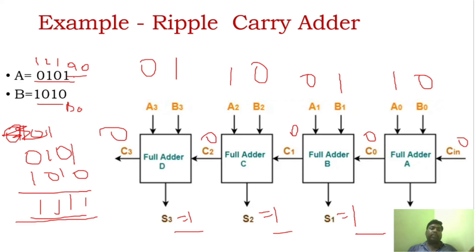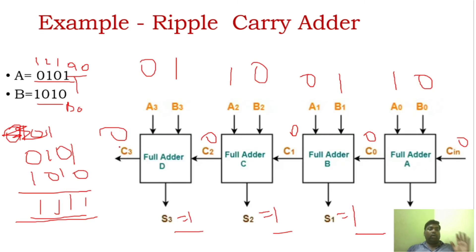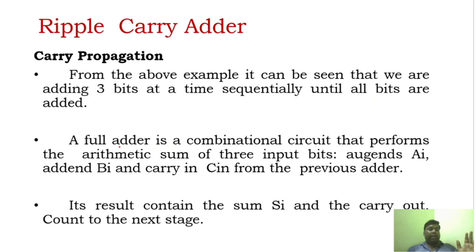If the question is asked, they will give these numbers and say: perform addition using ripple carry adder. What you have to do is execute the normal addition operation, then draw the 4-bit ripple carry adder, substitute the values, and produce the result — that is, what is the sum and what is the carry output.